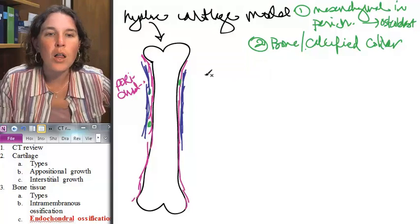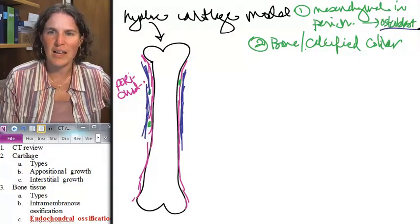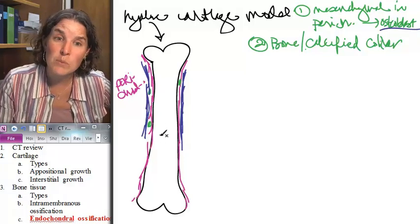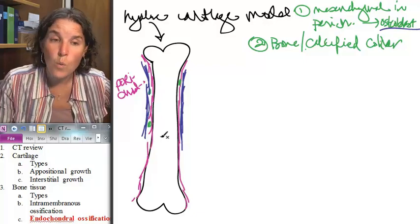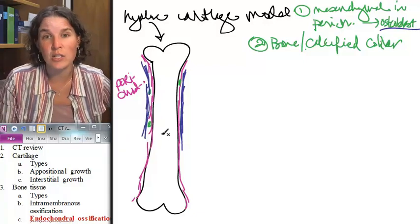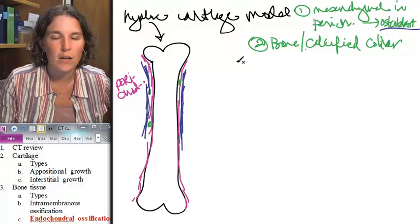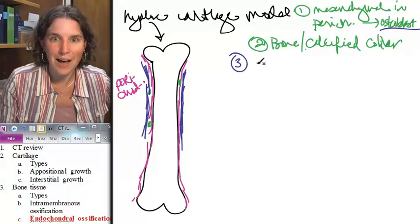So, all of a sudden, we bust a move and we build these osteoblasts, let's build this bony collar around this poor innocent cartilage model. What happens to the hyaline cartilage cells, the chondrocytes, inside? I mean, it's a little bit cold-blooded, really. Dude, they start to die.